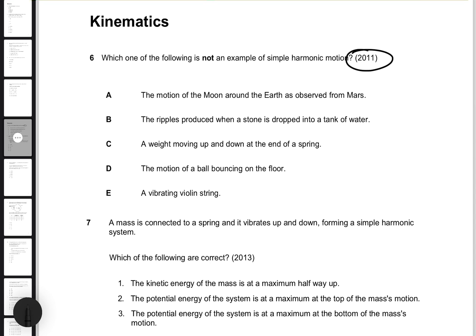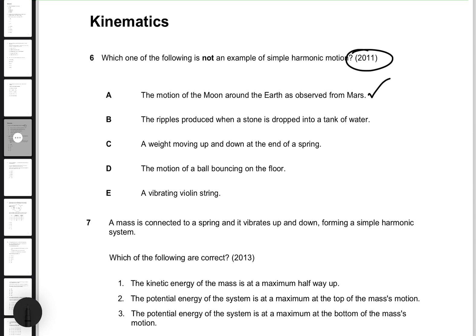Question six is actually an interesting one. It says: which one is not an example of simple harmonic motion? The question is from 2011. Choice A says the motion of the moon around the Earth as observed from above. Obviously, that's an example of harmonic motion because it's a sort of periodic motion and it repeats itself.